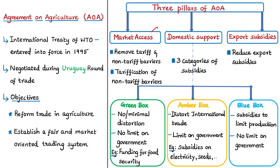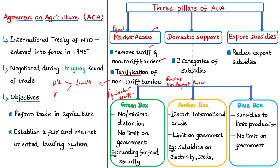The first pillar is market access — ensuring equal market access to member countries by removing tariff barriers and non-tariff barriers. The first step is called 'tarification,' meaning all non-tariff barriers such as quotas, minimum import prices, and discretionary licensing need to be abolished and converted into an equivalent tariff. There should be an equivalent tariff for all countries. There are tariff limits set as per this agreement which differ for developed and developing countries over different time periods.